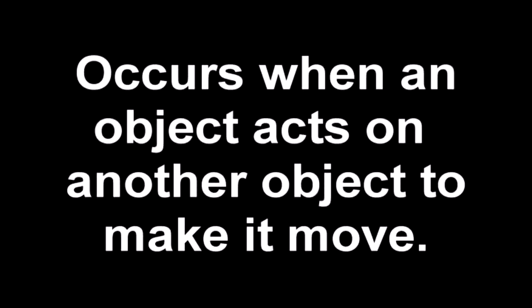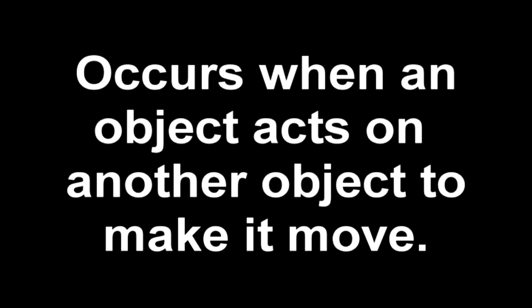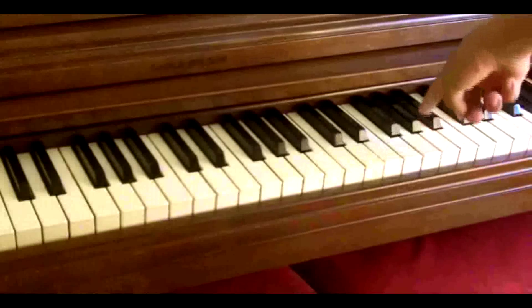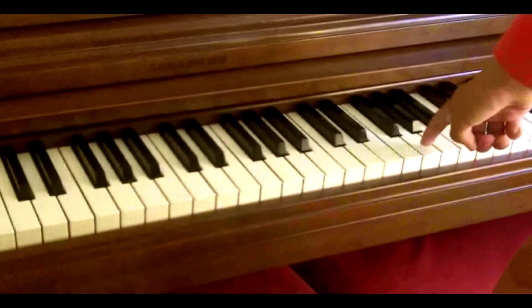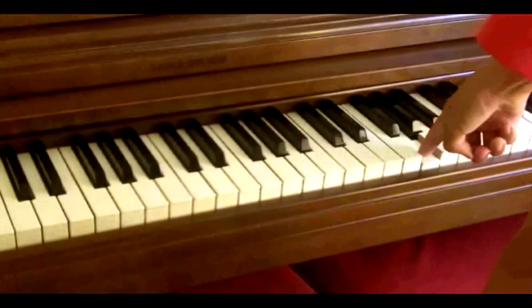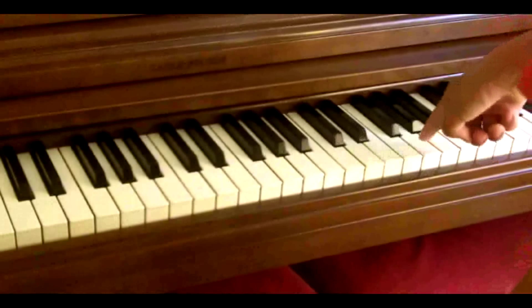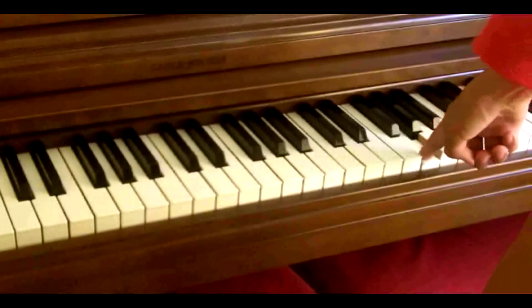The last type of motion is forced motion. Forced motion occurs when an object acts on another object to make it move. For example, here's a piano. I hit the piano key with my finger, and the piano key hits a string in the back of the piano. So basically it's a chain reaction.